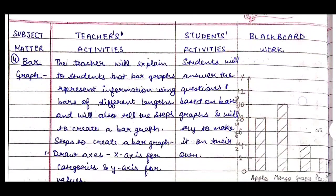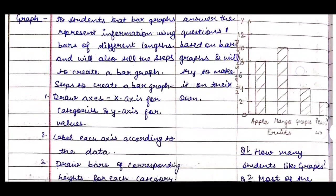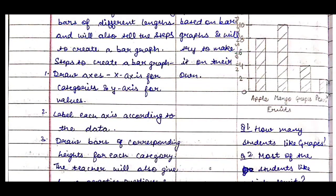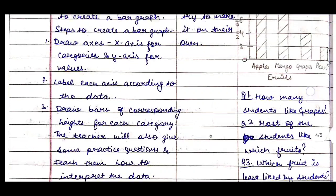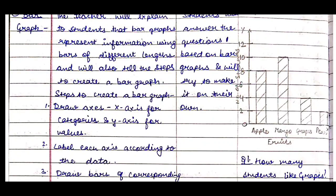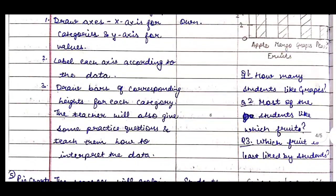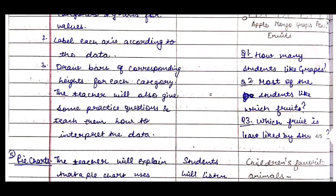Next subject matter is bar graph. The teacher will explain that bar graphs represent information using bars of different lengths, and will tell students the steps to create a bar graph: first, draw the x-axis for categories and y-axis for values; second, label each axis according to the data; third, draw bars of corresponding heights for each category. The teacher will give practice questions and teach how to interpret the data. Students will answer questions such as: how many students like grapes, which fruit is most liked, and which fruit is least liked by students.